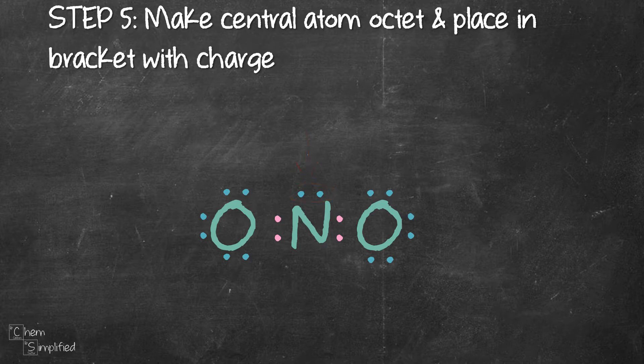Step 5, which is the final step, we need to make the central atom octet and place in the bracket with the charge. Right now nitrogen has six electrons, so we're missing two electrons. To make nitrogen octet, we need to borrow non-bonding electrons from the oxygen so we can do it like this.